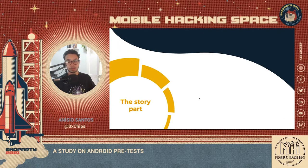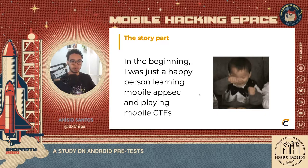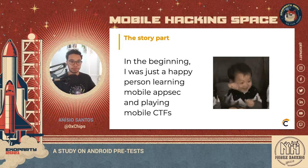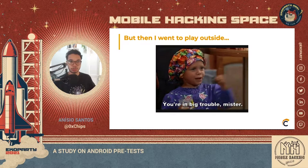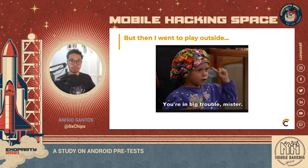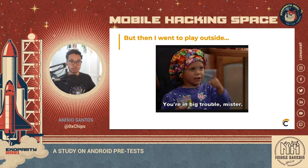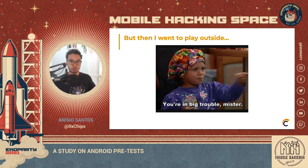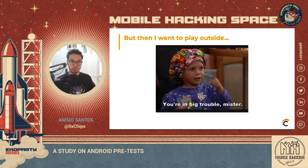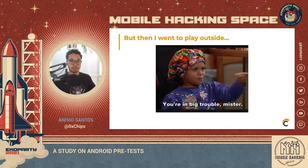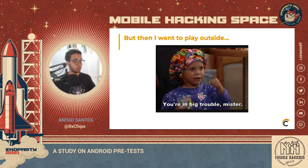I'd like to start with a little story. A long time ago, I was starting to learn about mobile application security and trying to learn new things every day, making some mobile CTFs. But then I decided to play outside — to look at real applications. And that's a problem, because think about an application as a piece of code that a company delivers to the customer. They have to make sure it has some kind of hardening, making static and dynamic analysis a little bit harder. And those steps we have to bypass before the real test is what we're going to call a pretest.